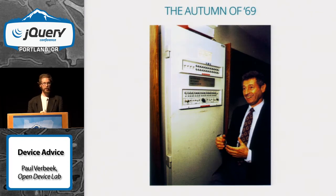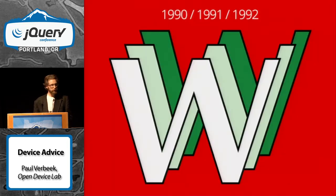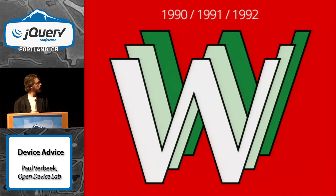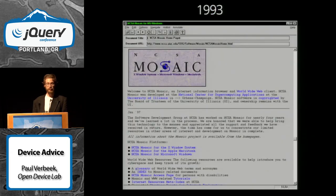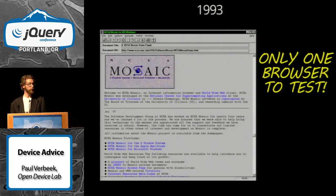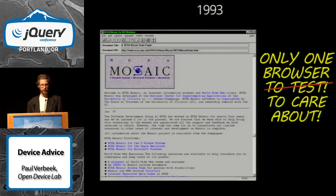In the autumn of 1969, Arpanet, the first packet switcher, was tested. In their first test, the computer crashed before it could even write a log. It was the first step towards the internet. Does anyone know what this is? It's the original World Wide Web logo — it might surprise you, but this was not made by a designer. More than 20 years later, around 1991, the World Wide Web was created, along with the first web browser, the first web server, and the first web page. Around 1993, the web was growing, largely thanks to the Mosaic browser, which is generally known as the first real graphical browser. Back then, you really only had one browser to care about.